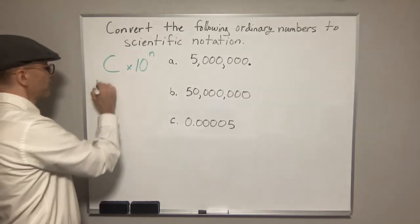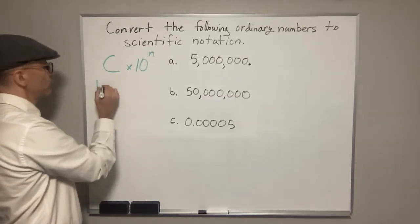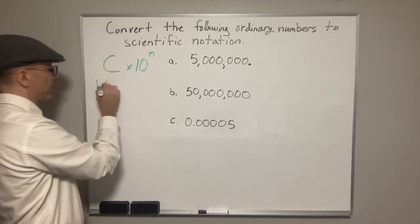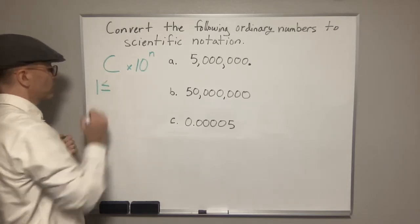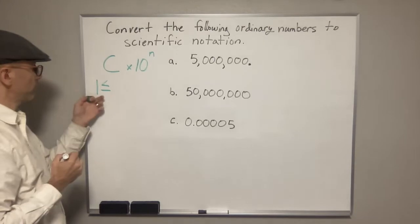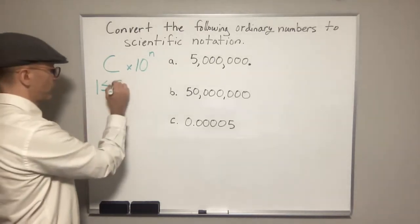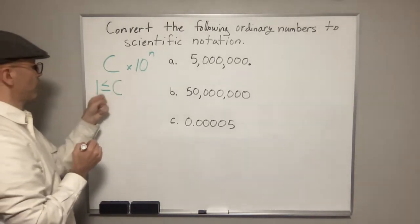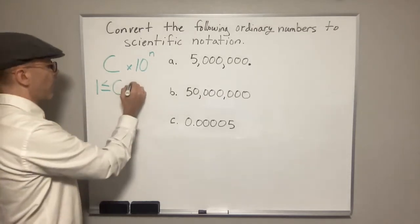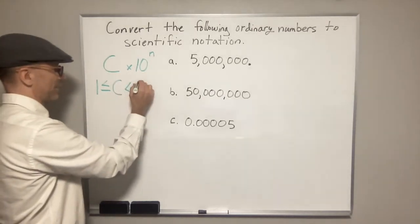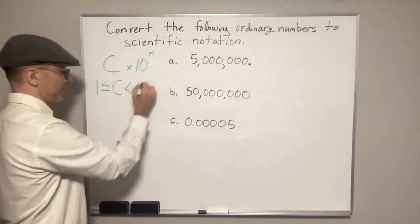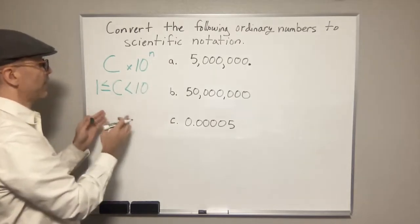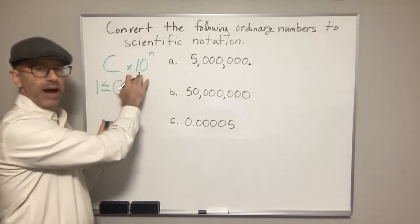So we need a number — this number c has to be either equal to or greater than one, but it's got to be less than ten. That's c, and then it's multiplied by some factor of ten.